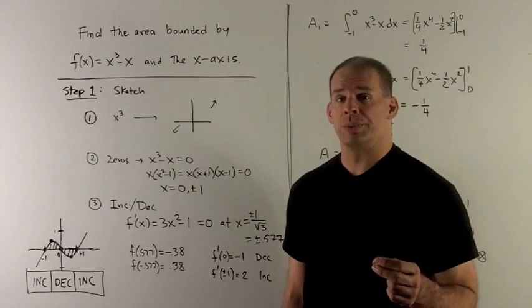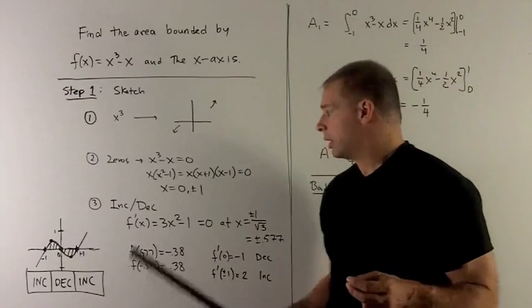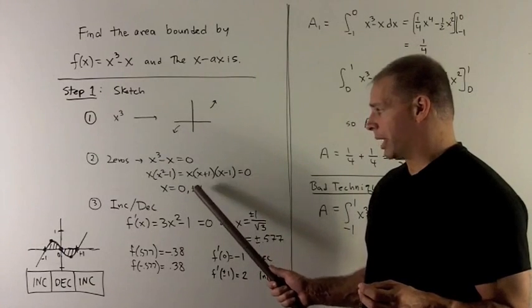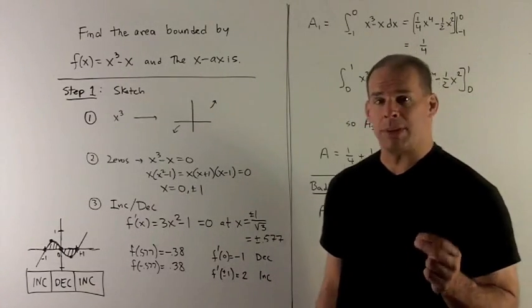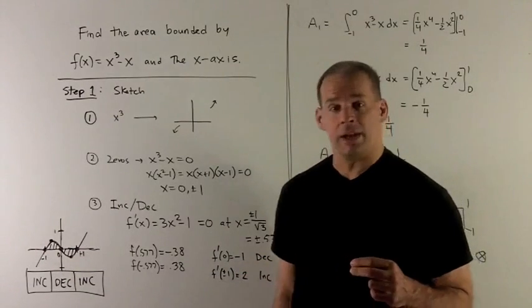Next, I look for zeros. x³ - x factors nicely. We get the roots 0 and plus or minus 1. So I plot them on the graph over here on the x-axis. We're going to hit in three spots.